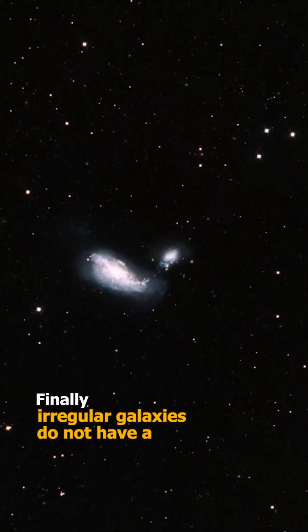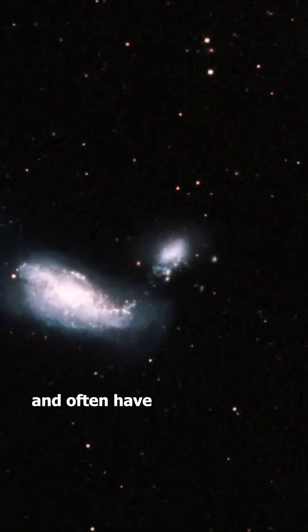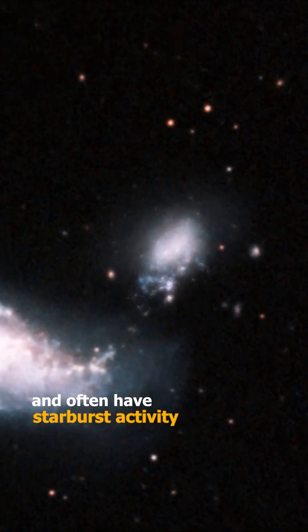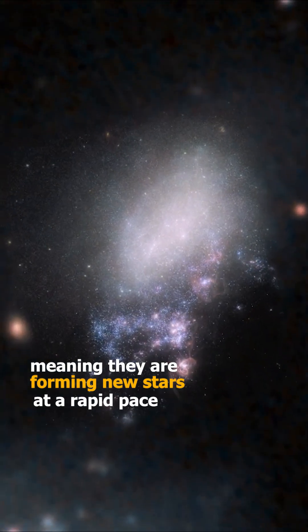Irregular galaxies do not have a definite shape and often have starburst activity, meaning they are forming new stars at a rapid pace.